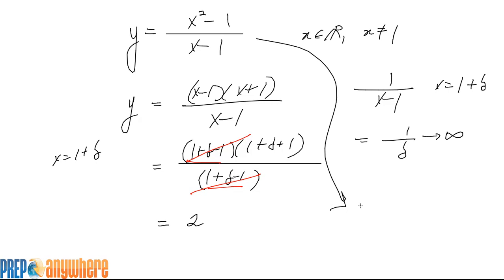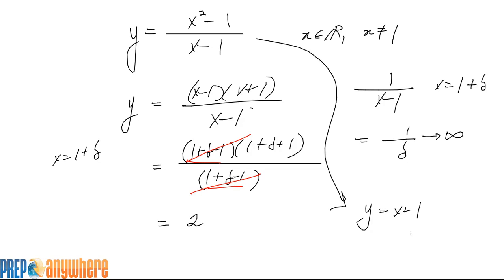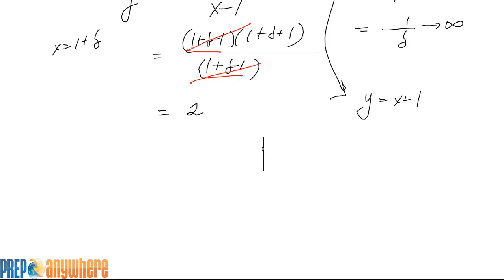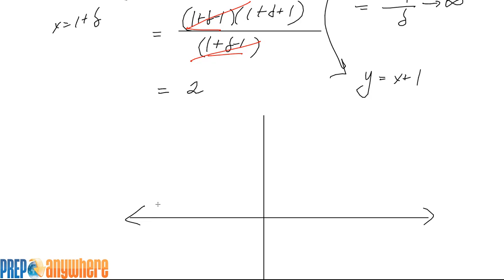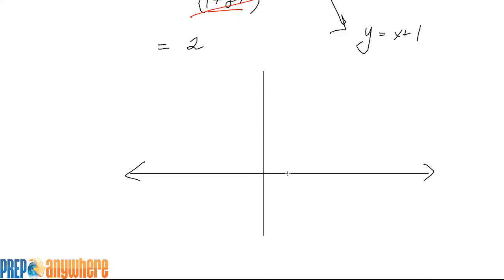Algebraically, this is doing this: from here we can get y equals x plus 1. Look, the only place where it's undefined is when x equals 1. So let me plot 1. Otherwise it looks like this line.